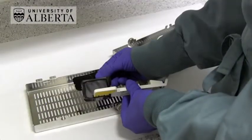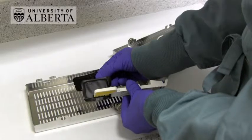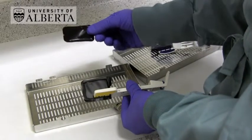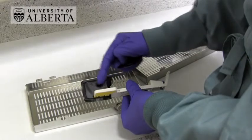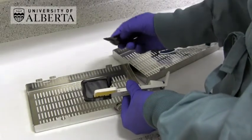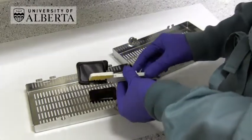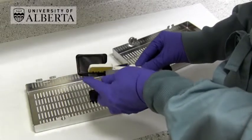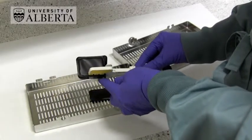For posterior periapicals with the bisecting angle technique, we use a size 1 receptor for children and a size 2 receptor for adults. Put the plate or film in the SNAP Array holder like this, gripping the very outermost edge of the plate.